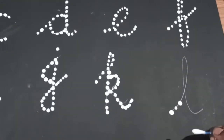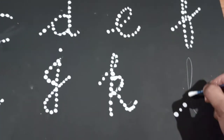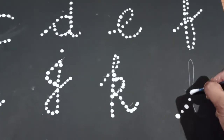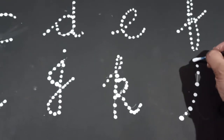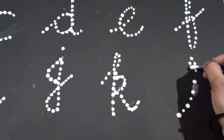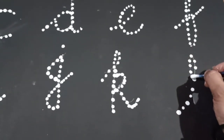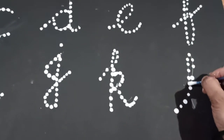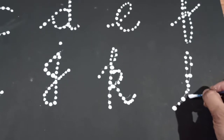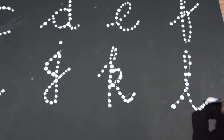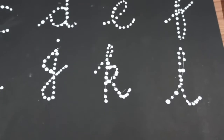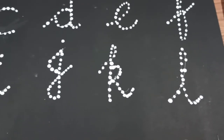Now I am doing L: slanting and take a turn, come straight line, one curve. This is the letter L.